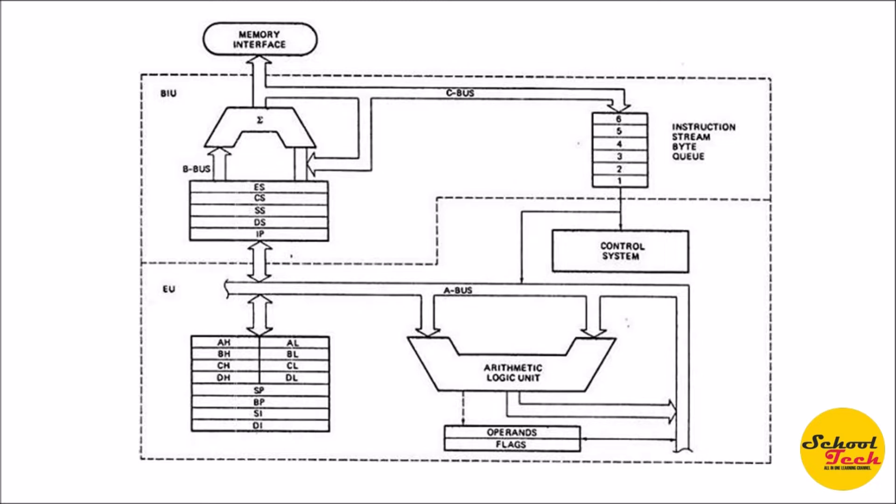Because there is the flow of instructions through the queue, the technique used is called pipeline architecture. When the queue is completely filled with program instructions, BIU will fetch new instructions only when some space is available in the queue, providing synchronization between BIU and EU.